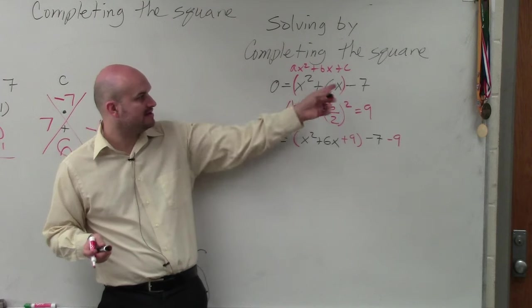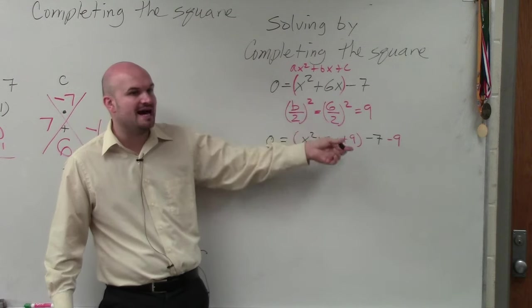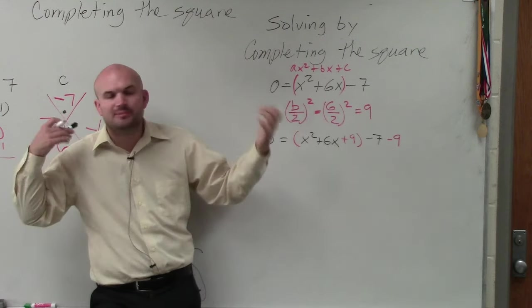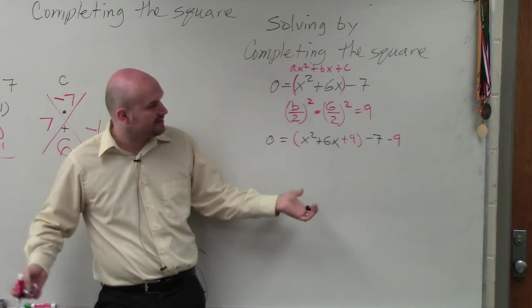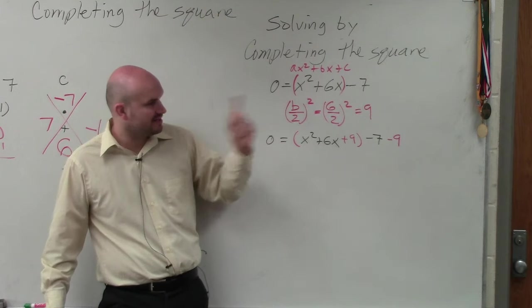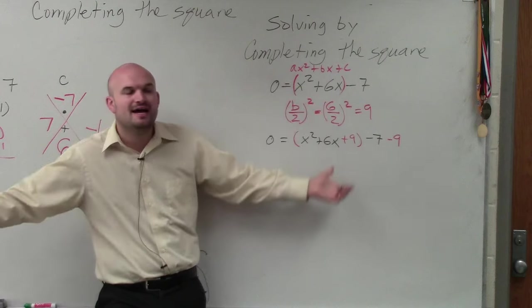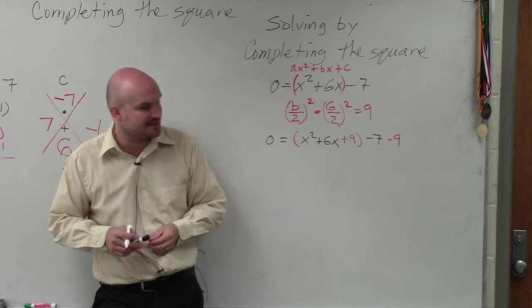There's a couple other ways we could do this. We could always put the 7 on the other side and add the 9 on both sides. But as far as the operations, it's exactly the same way. You guys might have had somebody else teach you just add on both sides. Adding and subtracting on the same side is the same thing as adding on both sides.